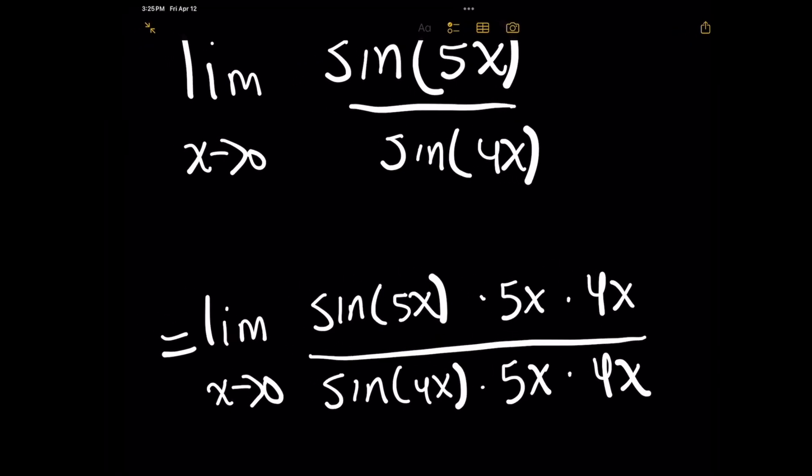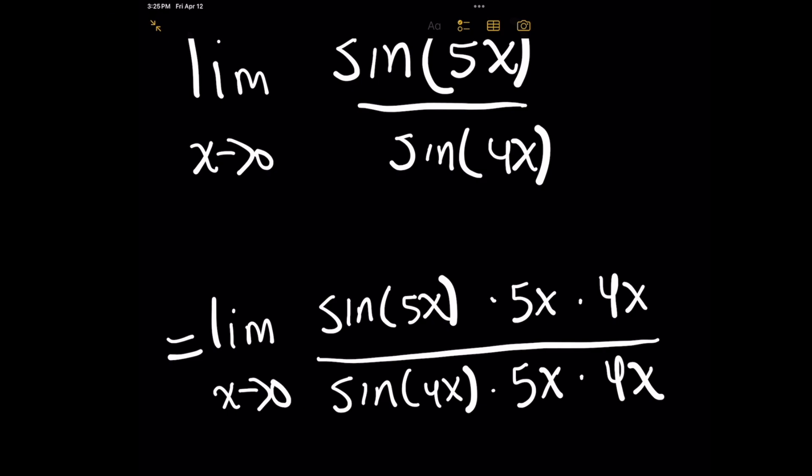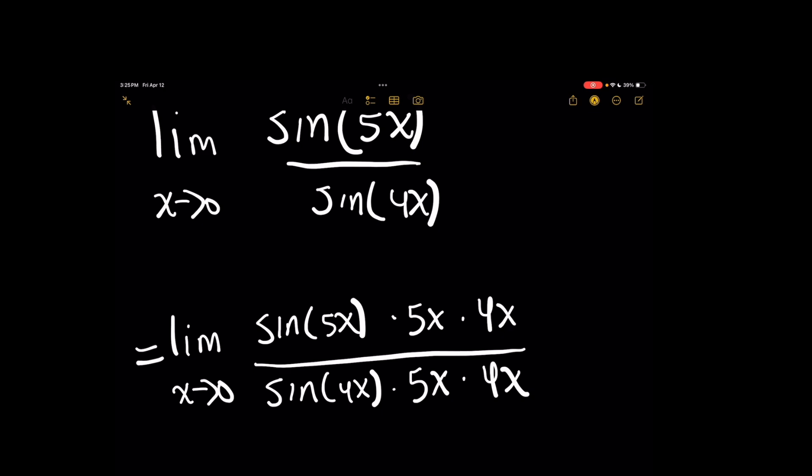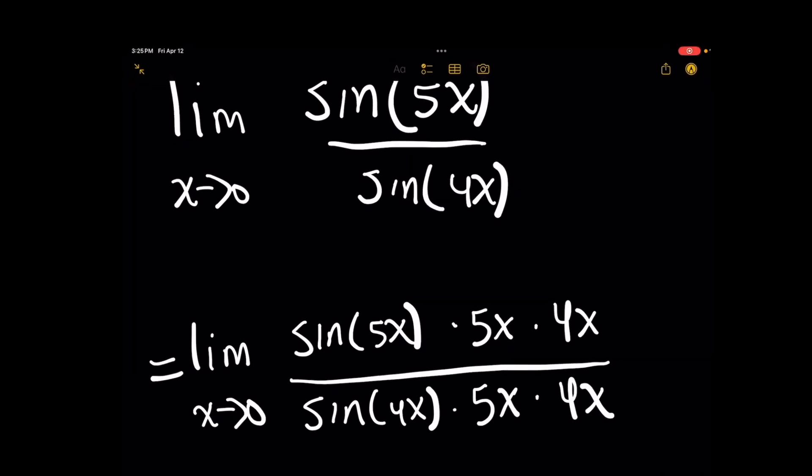But before we do that, we want to make sure that for each fraction that we have, whatever you have on the top in terms of x has the same constant in front of it, like the bottom, right? And so what I'm going to do is I'm going to break this up into a product of three fractions where we're going to take the limit of each one. And for each fraction, we want x to look the same on the top and bottom. So the first fraction will be sine of 5x over 5x. The second fraction will be 4x over sine of 4x. And then the last fraction will be the remaining terms, which will be 5x over 4x.